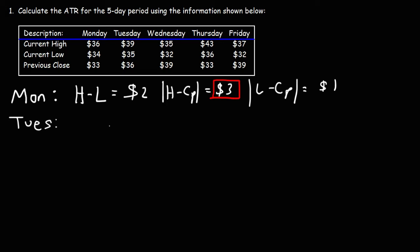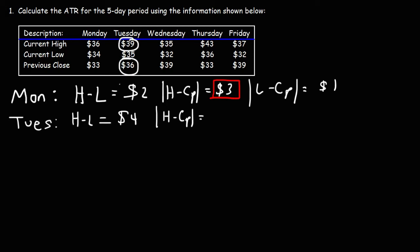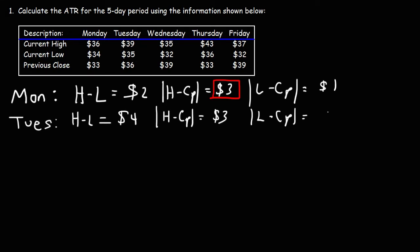Moving on to Tuesday: the current high minus the current low is 39 minus 35, which is $4. The current high minus the previous close is 39 minus 36, which is $3. The current low minus the previous close is 35 minus 36, which is negative 1, but the absolute value is positive 1. Selecting the highest, that's the $4 value.